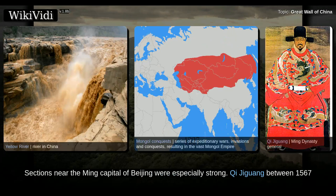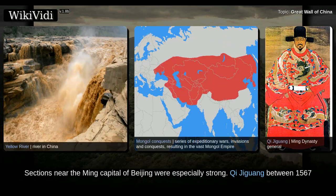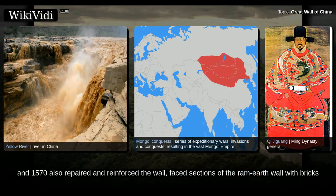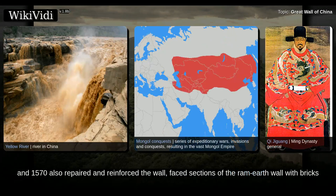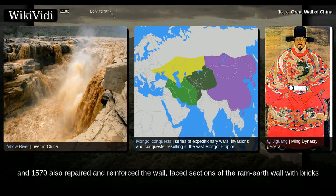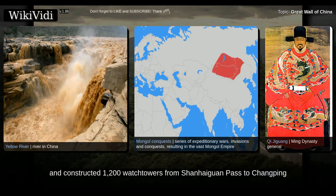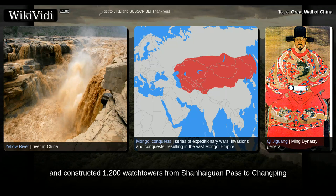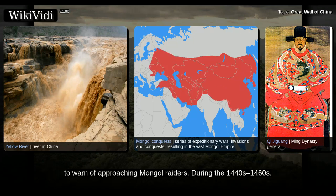Unlike the earlier fortifications, the Ming construction was stronger and more elaborate due to the use of bricks and stone instead of rammed earth. Up to 25,000 watchtowers are estimated to have been constructed on the wall. Sections near the Ming capital of Beijing were especially strong. Qi Jiguang between 1567 and 1570 also repaired and reinforced the wall, faced sections of the rammed earth wall with bricks, and constructed 1,200 watchtowers from Shanhaiguan past to Changping to warn of approaching Mongol raiders.